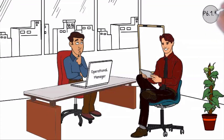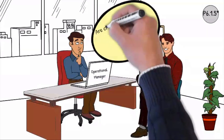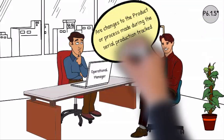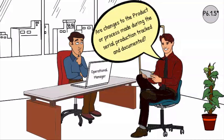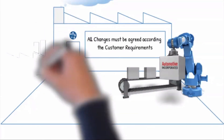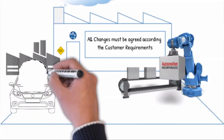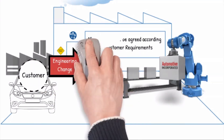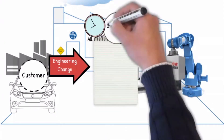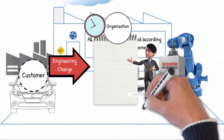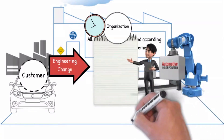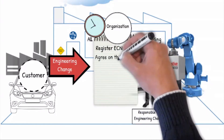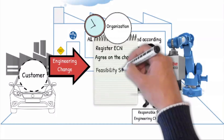Question P6.1.5: Are changes to the product or process made during serial production tracked and documented? All change management requests must be clearly documented and controlled according to the customer requirements. The time frame when the change must be implemented and who is responsible to manage the implementation must be regulated. Changes to the product and process are to be agreed upon, approved and released by the customer, including software changes.